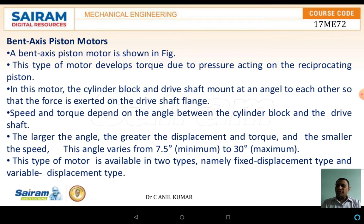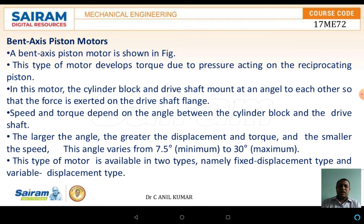The bent axis type motor is another type of piston motor. This type of motor develops torque due to the pressure acting on the reciprocating piston. In this motor, the cylindrical block and the driving shaft are mounted at an angle to each other so that force is exerted on the driving shaft flange. The speed and torque depend upon the angle between the cylinder block and the driving shaft. The larger the angle, the greater the displacement and torque, and the smaller the speed. Normally the angle varies from 7.5 degrees to a maximum of 30 degrees.